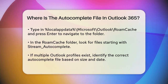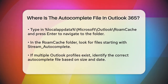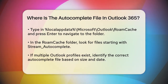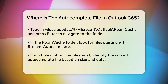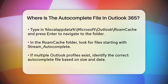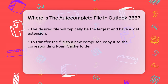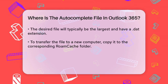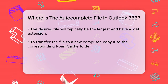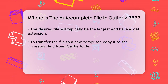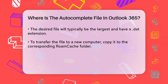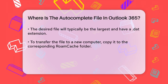To find the right file, arrange the files by date with the newest at the top. The file you're looking for is usually the largest one, containing the most autocomplete entries. This file will start with Stream_Autocomplete, followed by some characters, and end with a .dat extension.